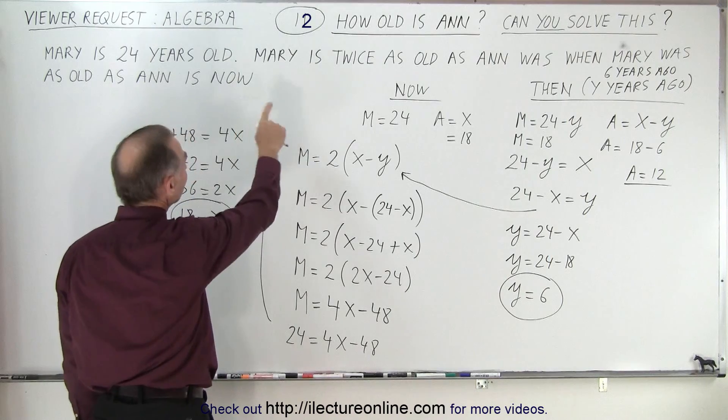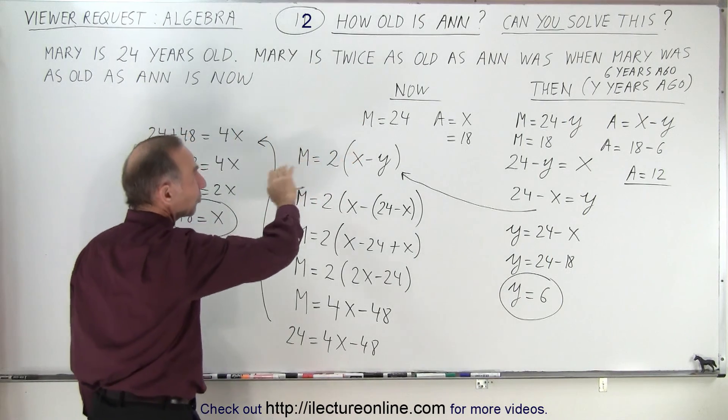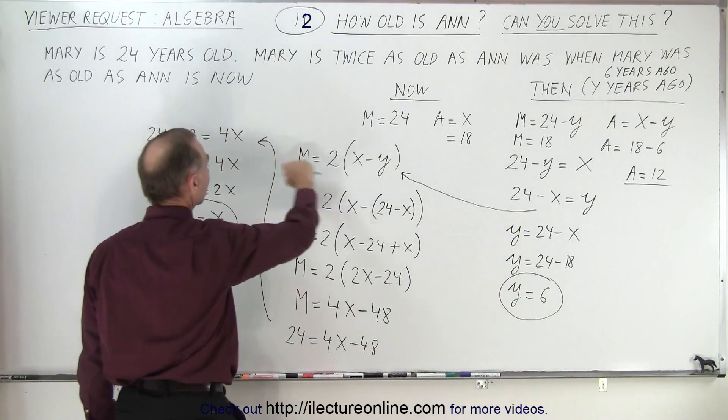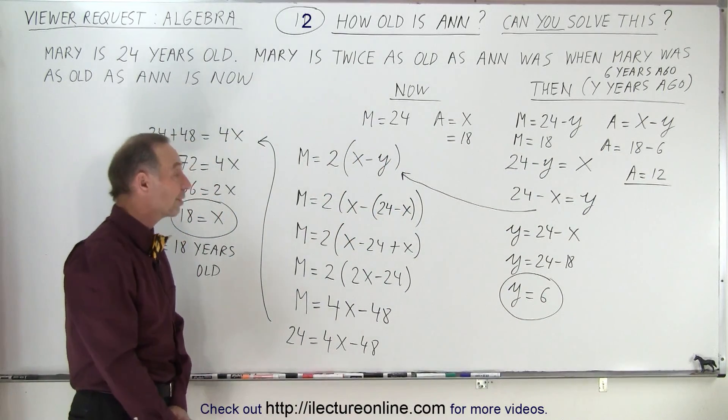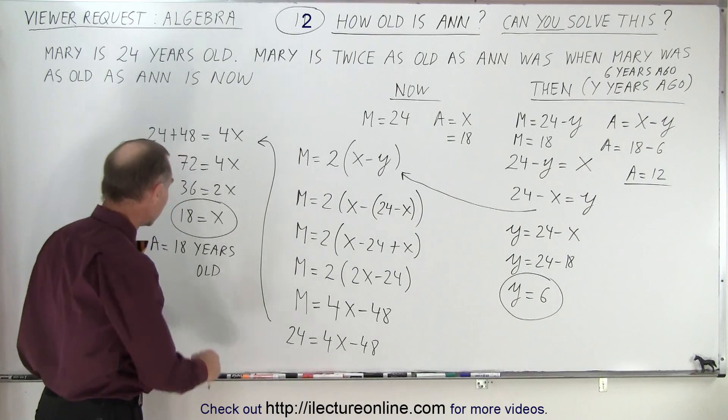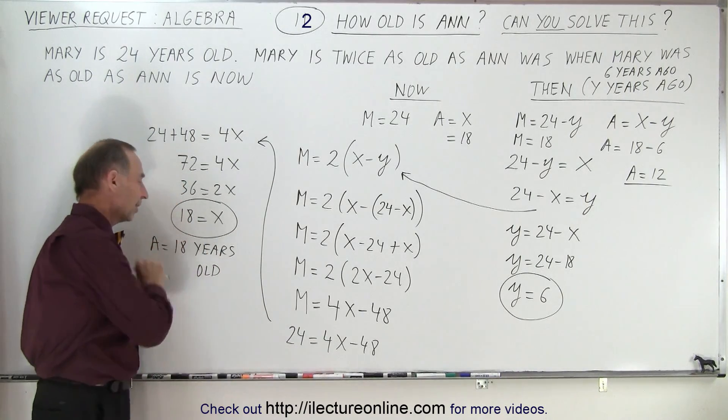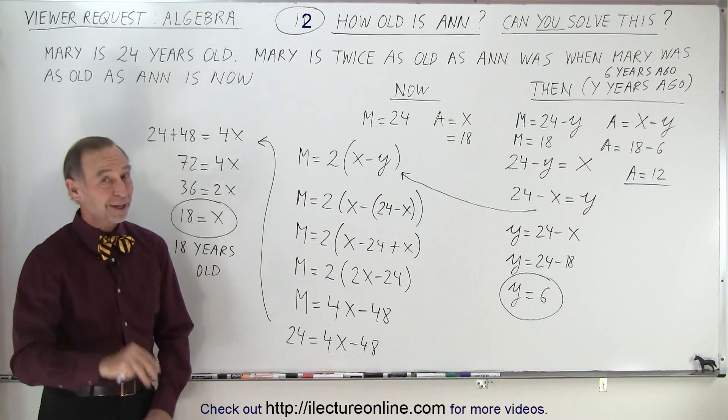So Mary is twice as old as Anne was back then, and so today she's 24 and Anne back then was 12. That's twice as, that's twice 12, so it seems to work out. So therefore we know that Anne is 18 years old and that is how it's done.